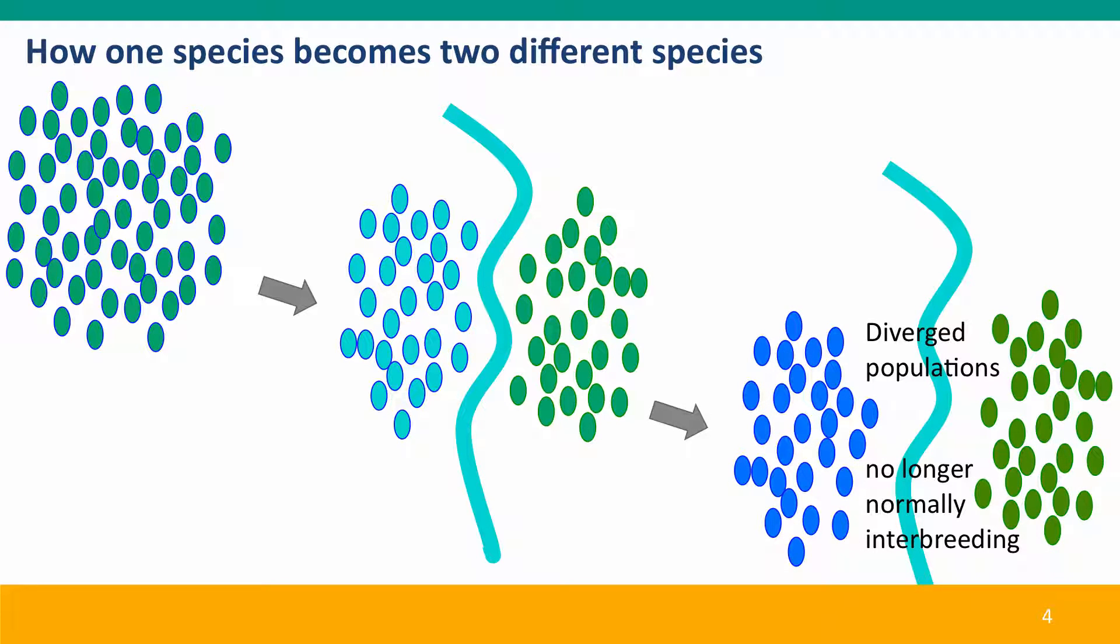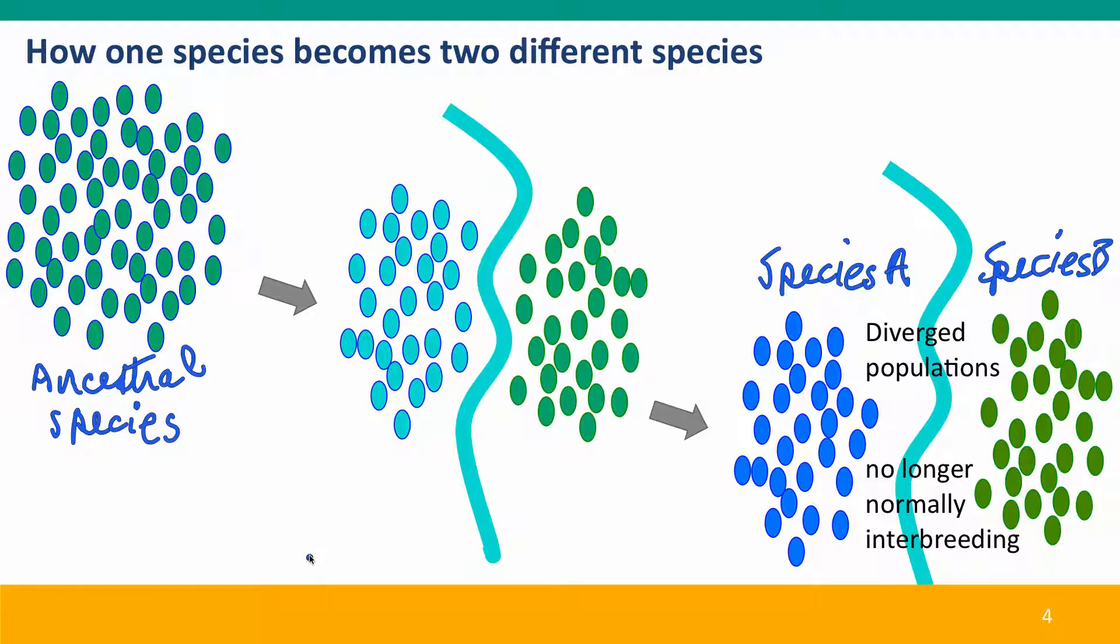And eventually the two populations will become so distinct that they can no longer interbreed. And we would say these are now two distinct species. And we would look back in time and we would say that this was the ancestral species. And this then is the process of speciation.